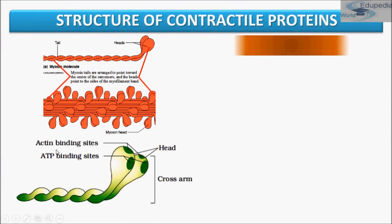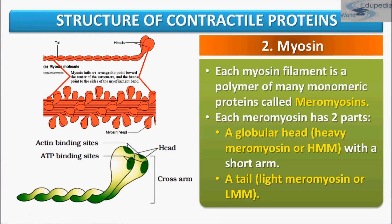Now, myosin is a thick filament. Each myosin filament is a polymerized protein — many monomeric proteins combine together to form a polymeric protein. Myosin is made up of monomeric protein units called meromyosins. Each meromyosin has two parts: first, a globular head, which we call HMM (heavy meromyosin with a short arm), and a tail, which we call LMM (light meromyosin). The head is known as HMM and the tail is known as LMM.